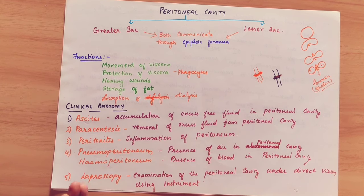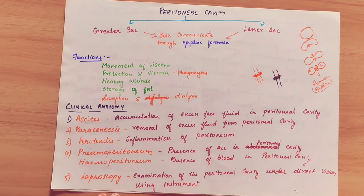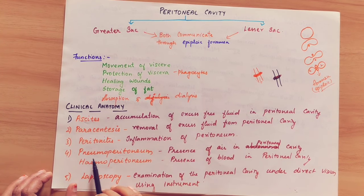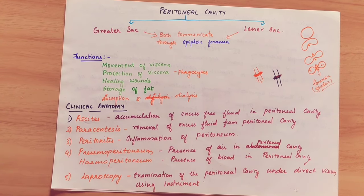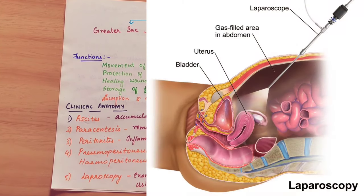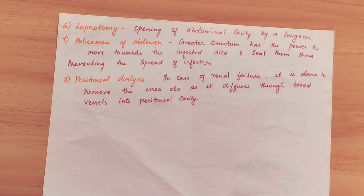Peritonitis is any inflammation of the peritoneum. Pneumoperitoneum means excess air accumulating in the peritoneal cavity. Haemoperitoneum means blood accumulating in the peritoneal cavity. Laparoscopy is a minimally invasive procedure performed in the abdomen. Laparotomy is when the surgeon opens the abdominal cavity.